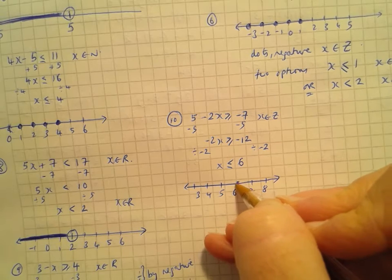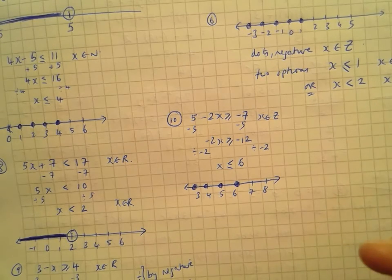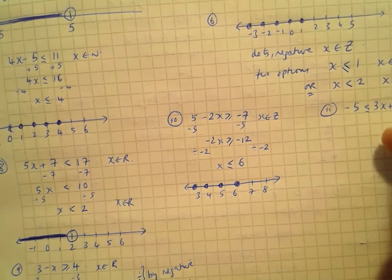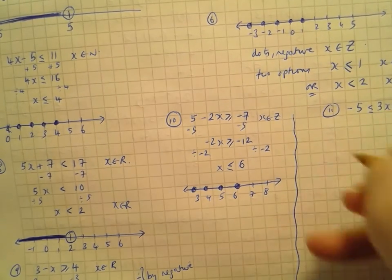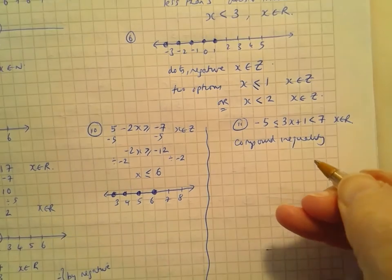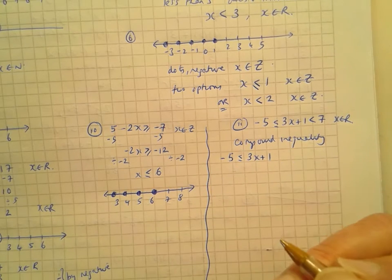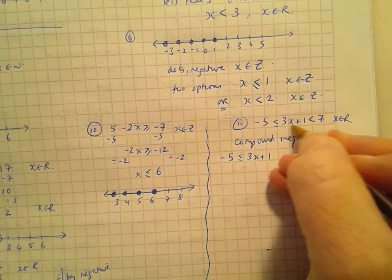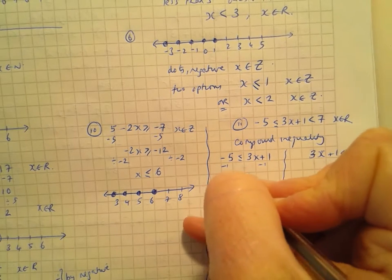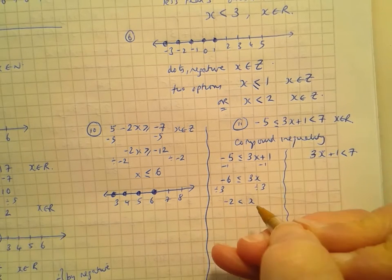Example 7: 4x - 5 ≤ 11, x ∈ N. When solving inequalities, treat them like equations. Add 5 to both sides: 4x ≤ 16. Divide by 4: x ≤ 4. Since it's natural numbers, we put 4 in the middle and place dots on 4, 3, 2, 1.